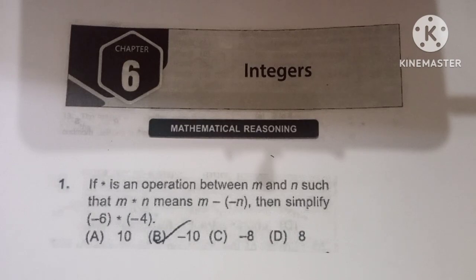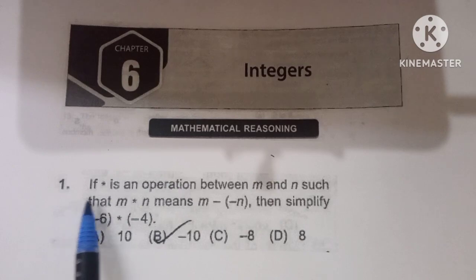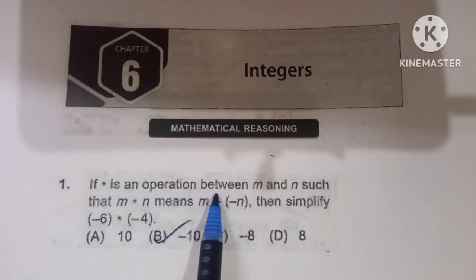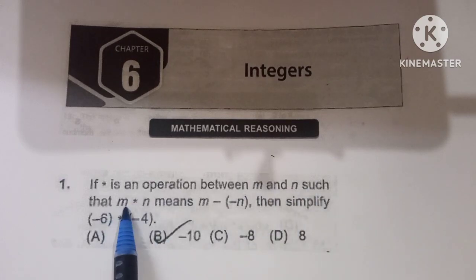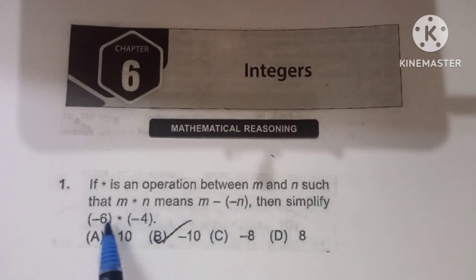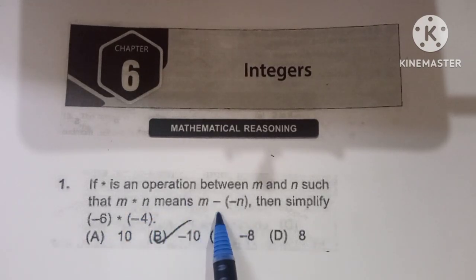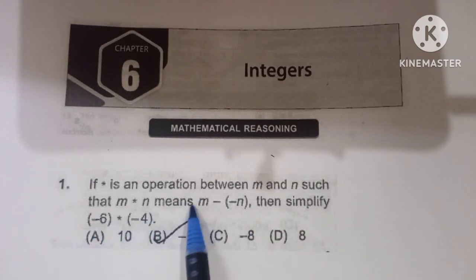Hello everyone. Today we will learn IMO International Mathematics Olympiad Class 6 Chapter 6 Integers Mathematical Reasoning. First problem: if star is an operation between m and n such that m star n means m minus of minus n, then simplify minus 6 star minus 4. Here m is minus 6 and n is minus 4.